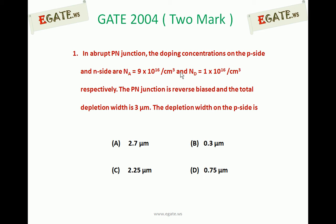In an abrupt p-n junction, the doping concentrations on the p-side and n-side are Na = 9×10¹⁶ per cm³ and Nd = 1×10¹⁶ per cm³ respectively. The p-n junction is reverse biased and the total depletion width is 3 micrometers. The depletion width on the p-side is: A) 2.7 μm, B) 0.3 μm, C) 2.25 μm, D) 0.75 μm.